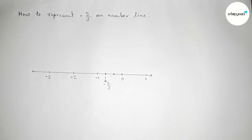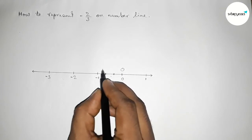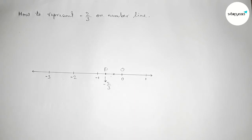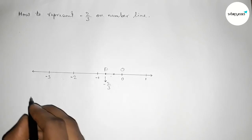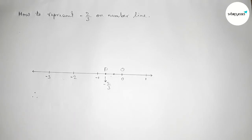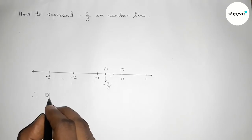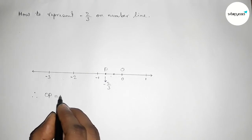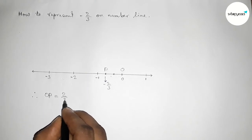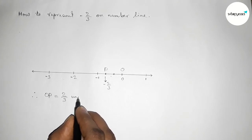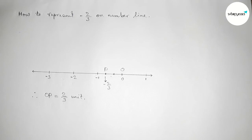Taking here point O and here P, so therefore the length OP will be 2 by 3 unit length. Since the length is never negative, length is always positive.